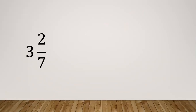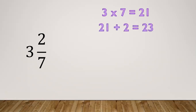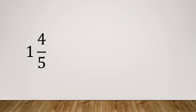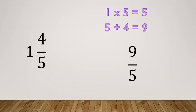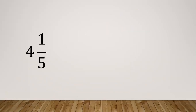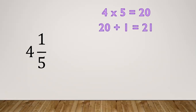Another example: 3 and 2/7. Multiply 3 times 7 equals 21, then 21 plus 2 equals 23. So the answer is 23/7. Another one: 1 and 4/5. Multiply 1 times 5 equals 5, then 5 plus 4 equals 9. So the answer is 9/5. Another one: 4 and 1/5. Multiply 4 times 5 equals 20, then 20 plus 1 equals 21. So the answer is 21/5.